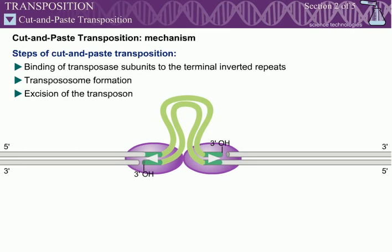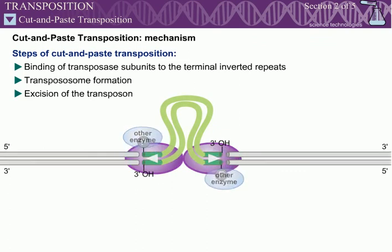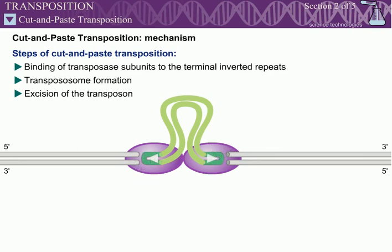Different transposons use different mechanisms to cleave these second DNA strands. For some transposons, an enzyme other than transposase directly cleaves these strands. For other transposons, the transposase catalyzes attack of the uncut ends of the DNA strands by the 3' hydroxyls directly opposite them on the other strand. This reaction forms DNA hairpin intermediates. The two hairpin ends are subsequently hydrolyzed by the transposase. Some transposons use still other, more complex mechanisms to cleave the other DNA strands.